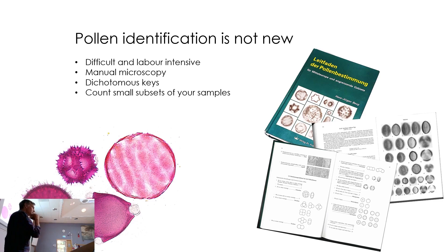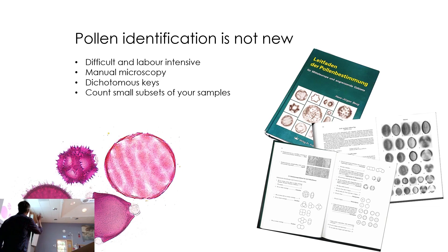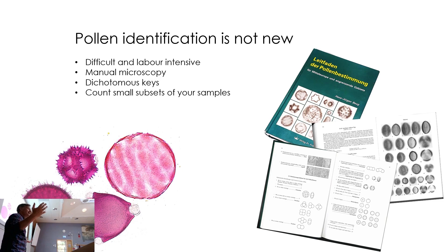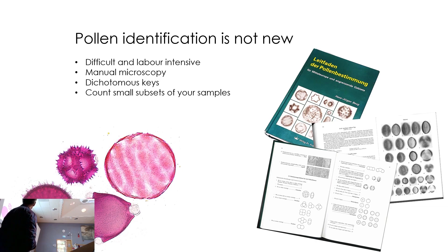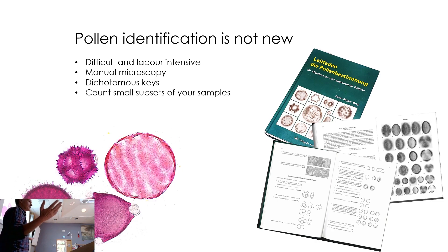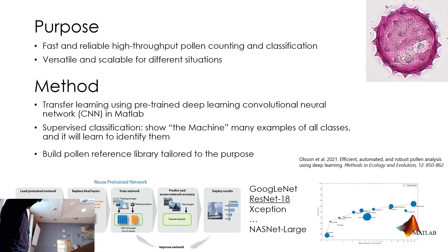Clearly pollen analysis is something people have been doing for a long time, but you typically rely on sitting at a microscope doing this very manually. There are rather intimidating German dichotomous keys where you can actually identify your pollen quite well, down to various groups at least, if not species. But because it's so time-consuming, what people typically do is collect a few samples and then subsample them. A few pollen from a few samples is usually what people have been doing in pollination ecology, and we want to be able to scale that up a lot. High throughput — that's what we want.